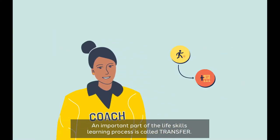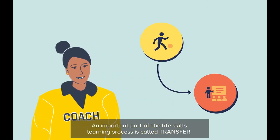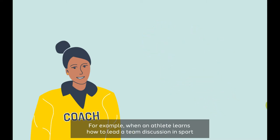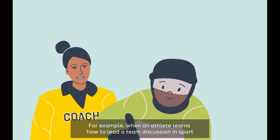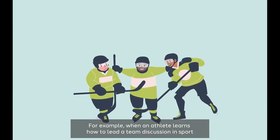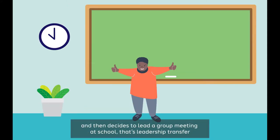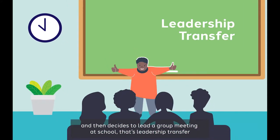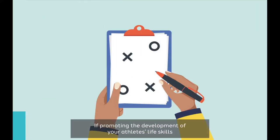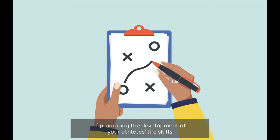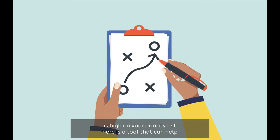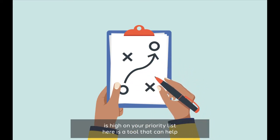An important part of the life skills learning process is called transfer. For example, when an athlete learns how to lead a team discussion in sport and then decides to lead a group meeting at school, that's leadership transfer. If promoting the development of your athlete's life skills is high on your priority list,